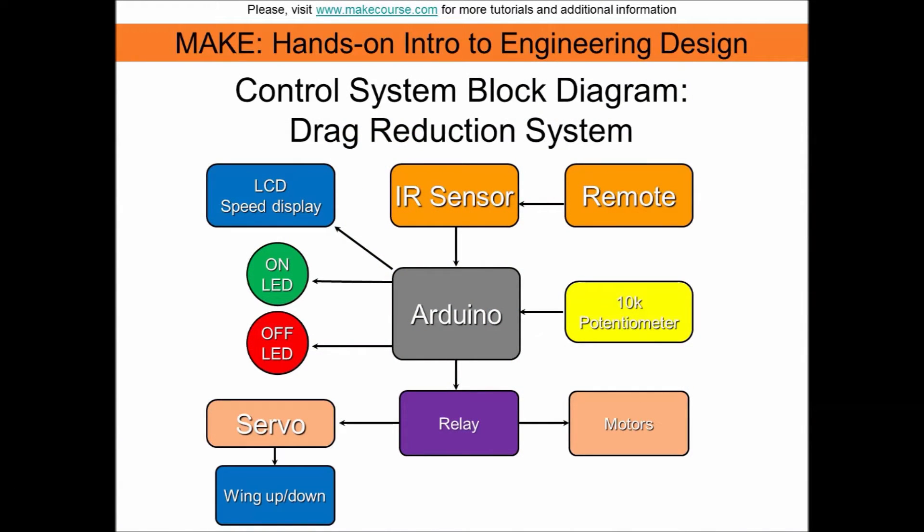Here is the control system block diagram. The system is turned on and off by sending an IR command to the Arduino. An additional IR command is used to turn on the relay board which powers the motors and servo. The potentiometer adjusts the motor's supply voltage via a pulse width modulation output on the Arduino.